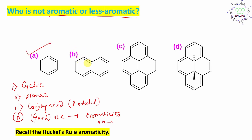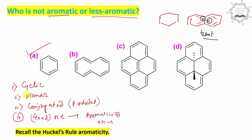If you look at option B, it actually raises a doubt. The molecule looks like this. In this molecule there are actually two hydrogens, and these two hydrogens have very severe repulsion among them. Consequently, in order to avoid this repulsion, the molecule became bent. Bent means it deviates from the planar arrangement, so it is not planar. That's why it deviates from aromaticity, meaning it doesn't have that much stability — you can say it has lesser stability.